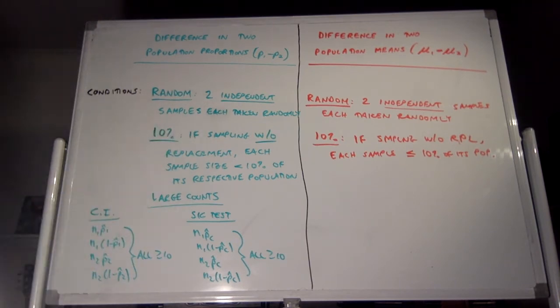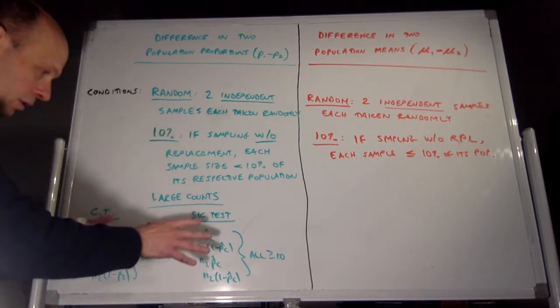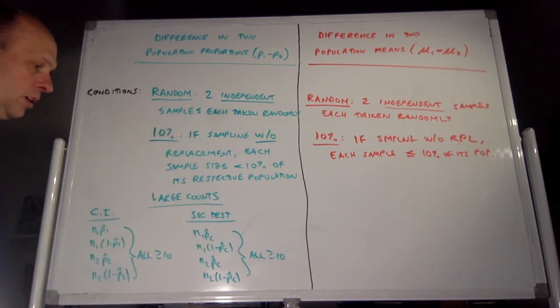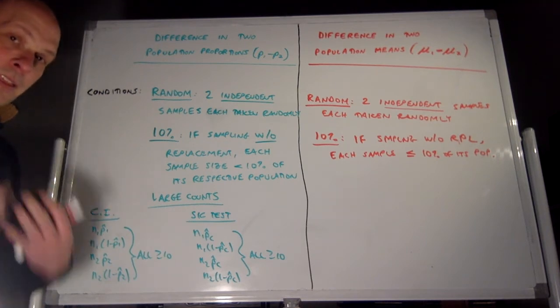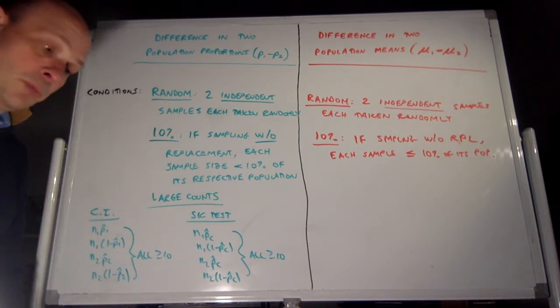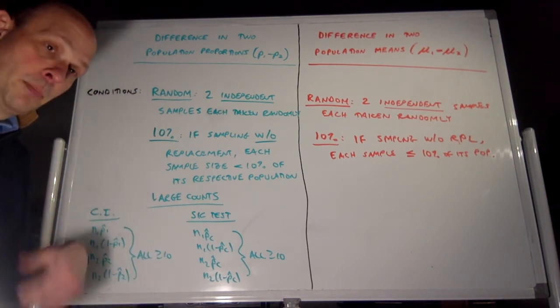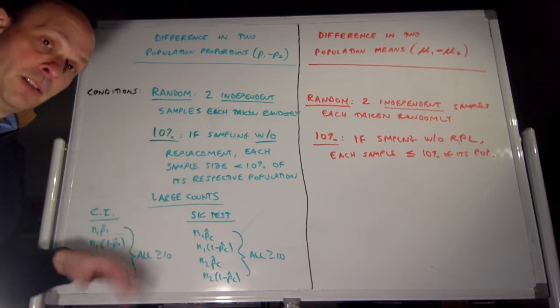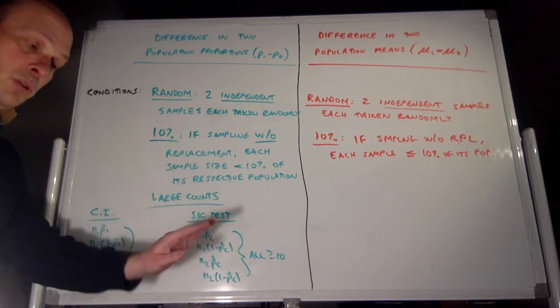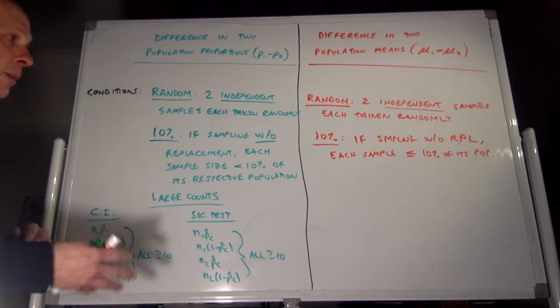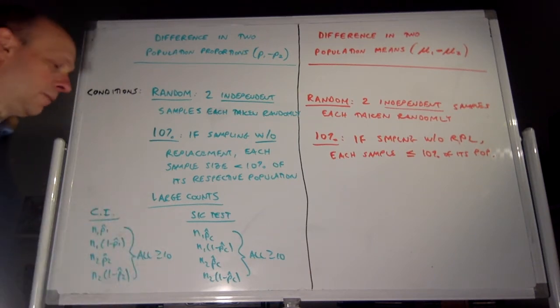You'll notice in your textbook they'll just use the p-hat version for both, but a recent change in the AP Statistics course description from the College Board says if you're doing a significance test, you really should use the pooled p-hat c version and not the individual p-hat version. If this large counts condition is met, it ensures approximate normality of your sampling distribution of all your p-hat 1 minus p-hat 2 values.